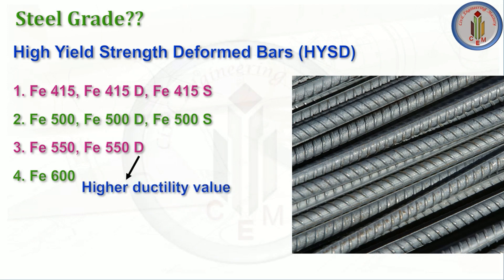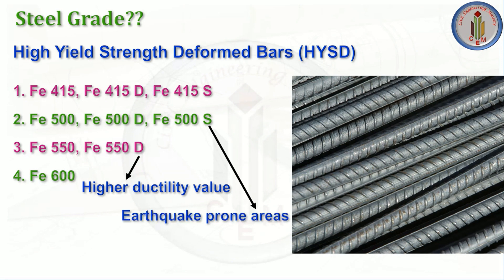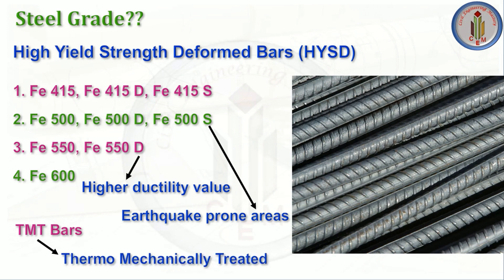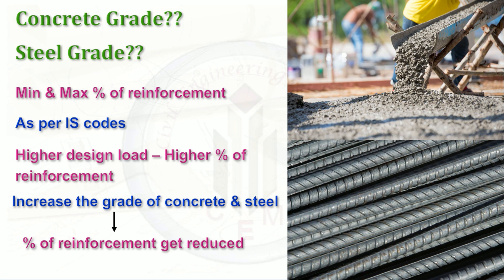The suffix 'D' denotes high ductility, which is required for seismic zones and earthquake-resistant structures needing ductile detailing. Fe 500S is mainly used for seismic zone areas. TMT stands for thermomechanically treated bars. The steel grade also depends on the load and the permissible percentage of reinforcement as per IS code — higher design loads require higher reinforcement percentage. To reduce reinforcement percentage, we increase the grade of concrete and steel.